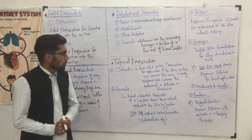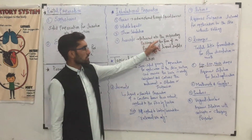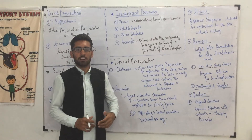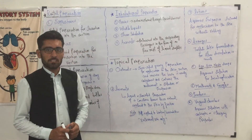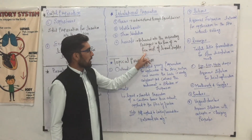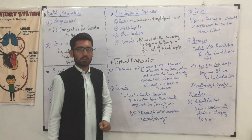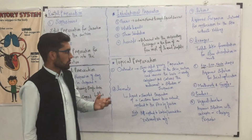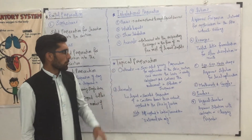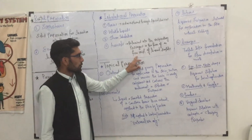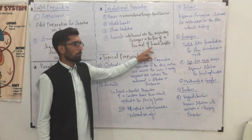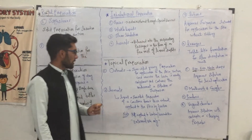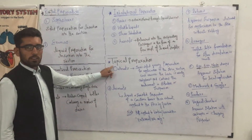Aerosols are released into the respiratory passages in the form of a fine mist of liquid droplets. Atomizers are used to convert the dosage form into a fine mist of liquid droplets, which then reach their target site.